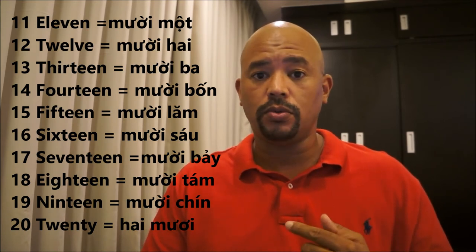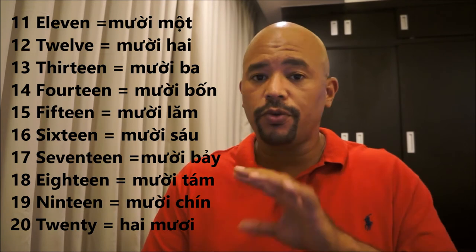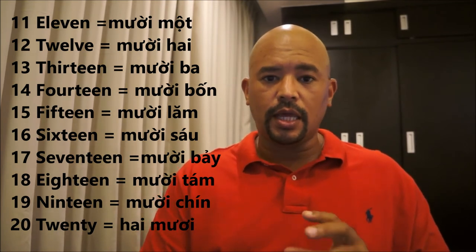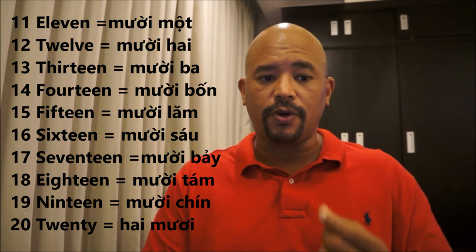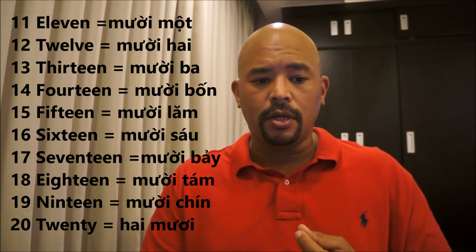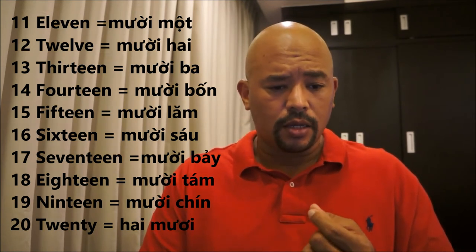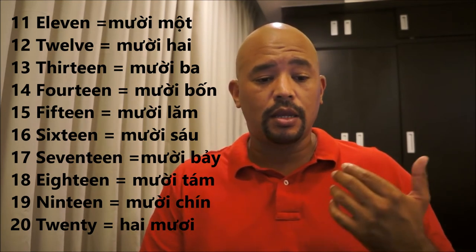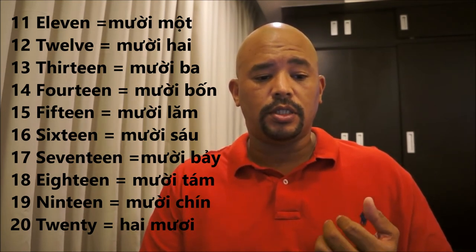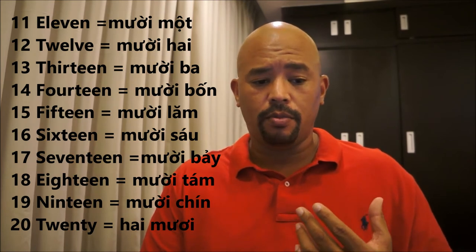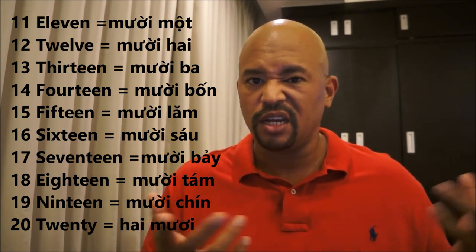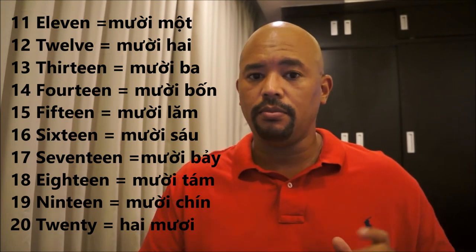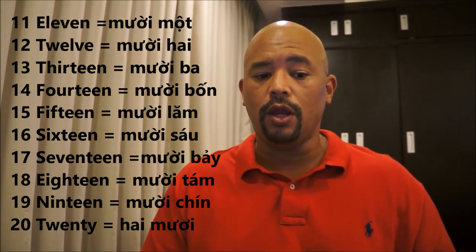15 gets a little different — it's a little weird. Instead of 'năm' like it was for 5, it's 'lăm,' I think. So it's 'mười lăm.' Then back to 16: 'mười sáu.' 17 is 'mười bảy' — told you I had problems with that one. 18 is 'mười tám.' 19 is 'mười chín.'